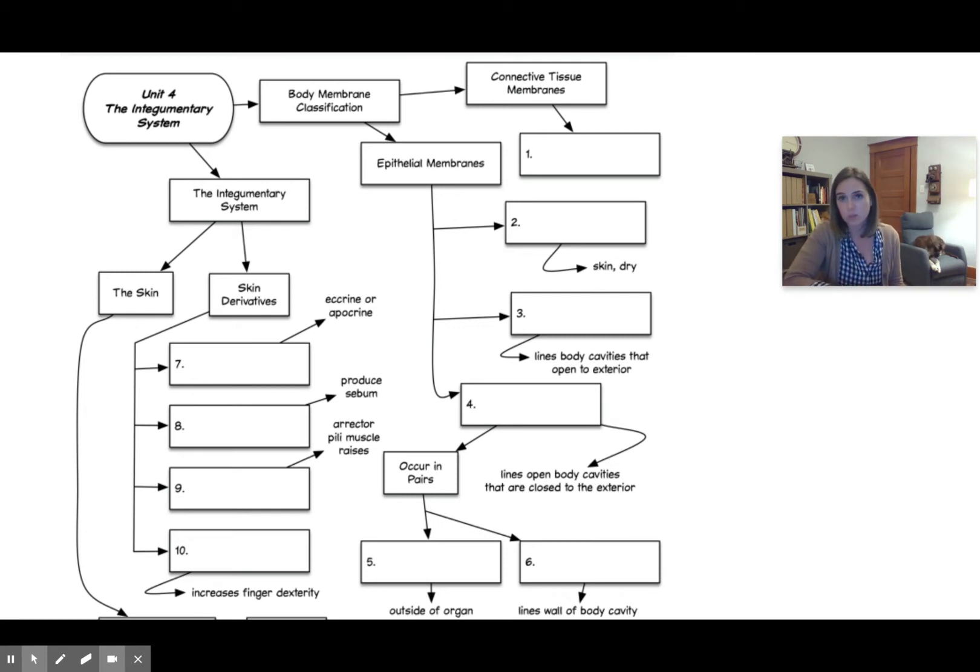We're gonna start first with the classification of our body membranes, beginning first with the only connective tissue membrane. This is the one found in your joints, which is called the synovial membrane. And we have our epithelial membranes. Number two is referring to the one that is your dry skin, which you should know as your cutaneous membrane.